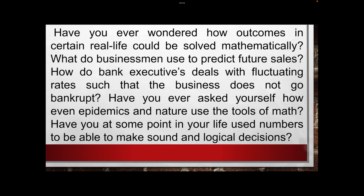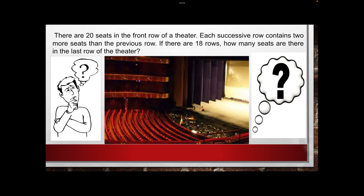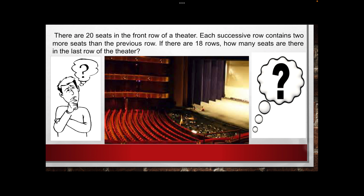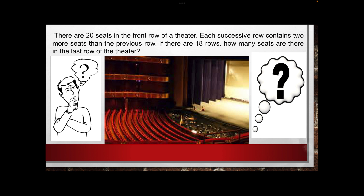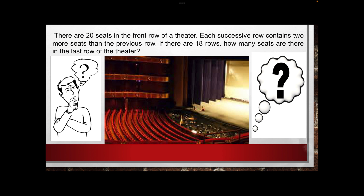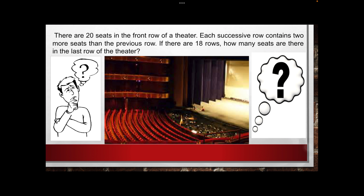These are the introductory questions related to arithmetic sequence. So let's start with these problems. What we are going to do first is to have your wild guess. There are 20 seats in the front row of the theater, and each successive row contains 2 more seats than the previous row.